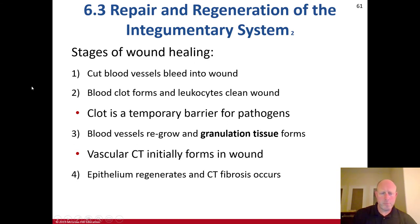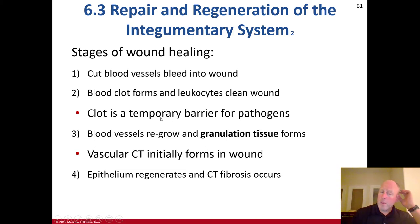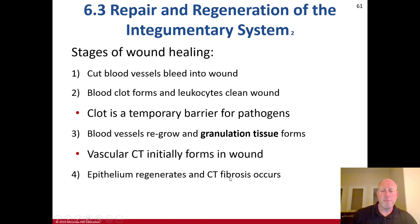The stages of wound healing: cut blood vessels bleed into the wound, a blood clot forms, and leukocytes clean the wound. The clot is a temporary barrier for pathogens. Blood vessels then regrow and granulation tissue forms; a vascular connective tissue is initially formed in the wound. The epithelium then regenerates and connective tissue fibrosis occurs, restoring function where regeneration applies — in situations where tissues can be regenerated.